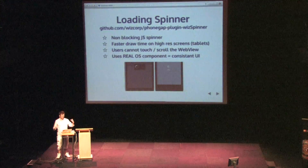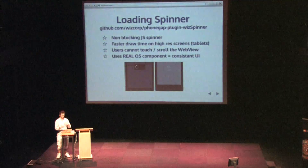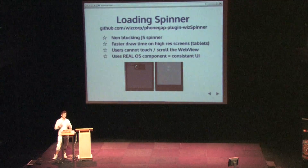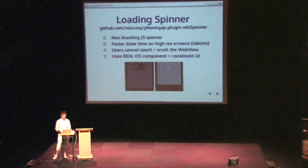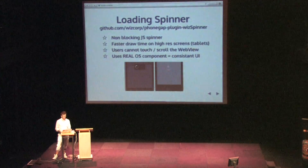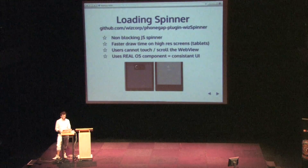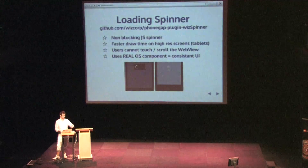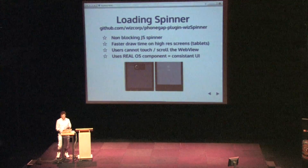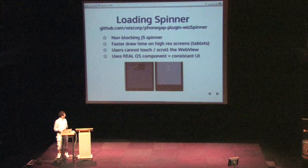We also noticed that if you have a big div full screen on a tablet, you're going to see a paint effect, especially with an opacity background layer. Using a native spinner means users cannot touch your web view or any part of your app at all — that's real nice. It uses a real OS component: on Android it's something like a spinner dialogue, and on iOS it's the UI activity indicator. WizSpinner is PhoneGap 3 compatible, so you can get it on PlugMan. I'll show you this in a live demo in a bit.